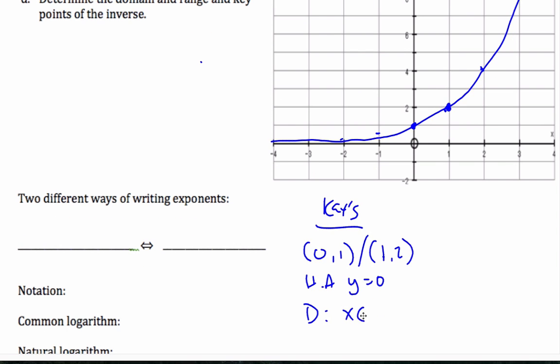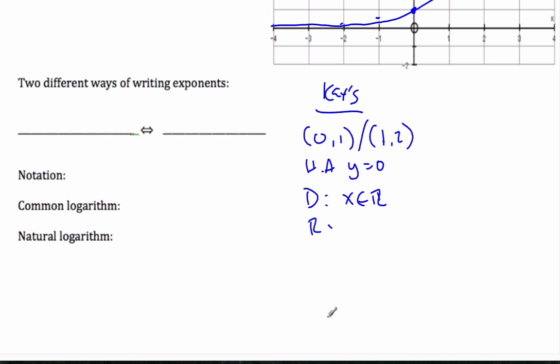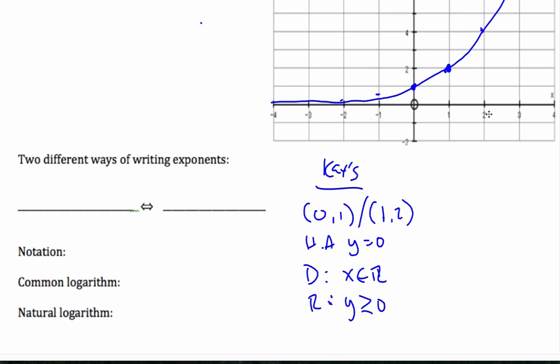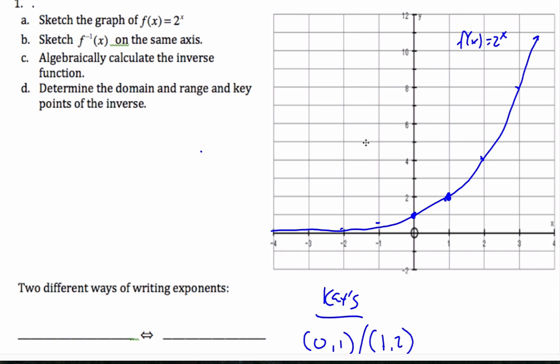And we'll also say that the domain is x can be any number, whereas the range is going to be y is bigger than 0, because it's asymptotic here, and so it's all above the x-axis, and so y is always positive.